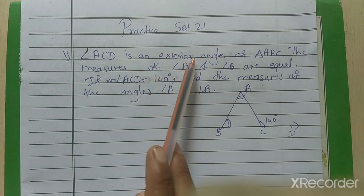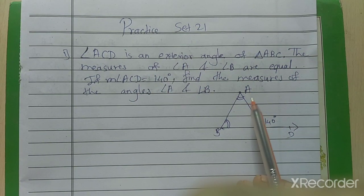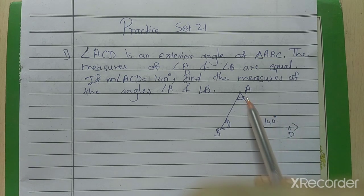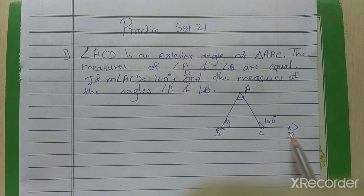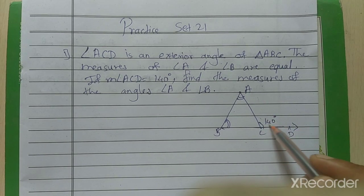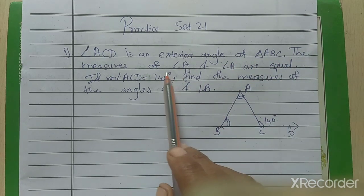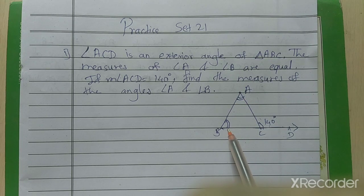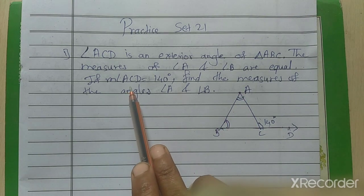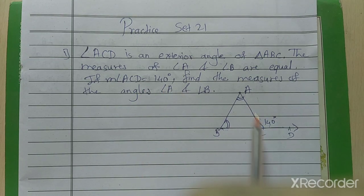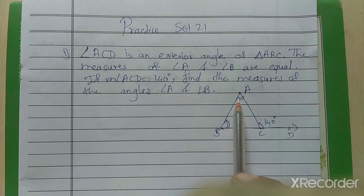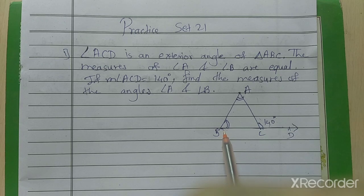Angle ACD is an exterior angle — it is outside the triangle, so it is the exterior angle of the triangle. This exterior angle ACD is 140 degrees. Also, the measure of angle A and angle B are equal. We have to find the measure of angle A and angle B.